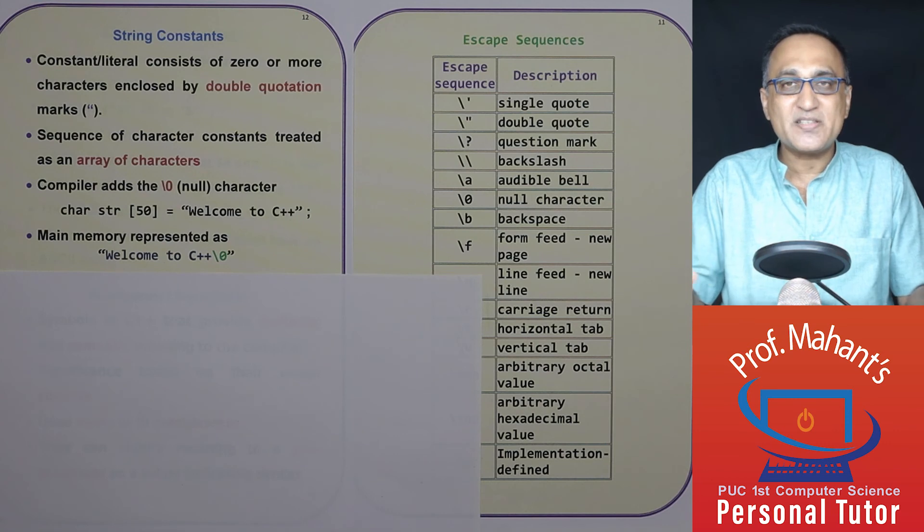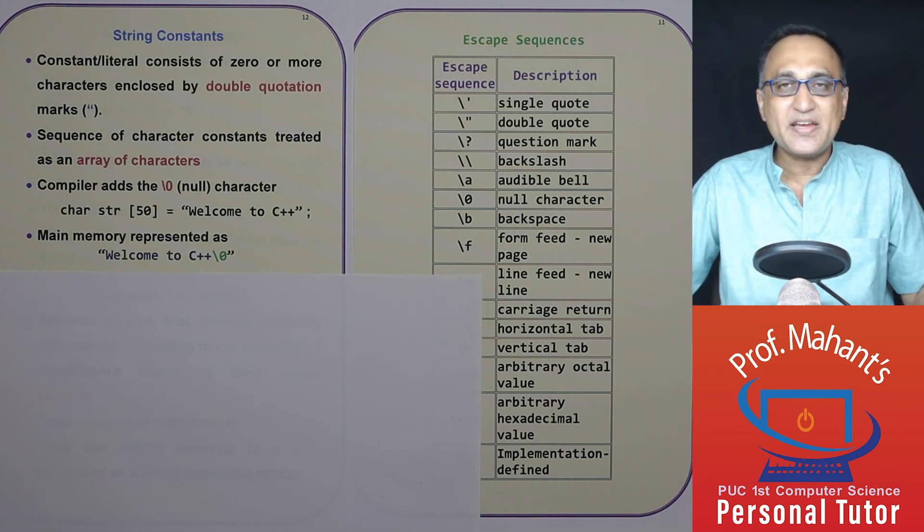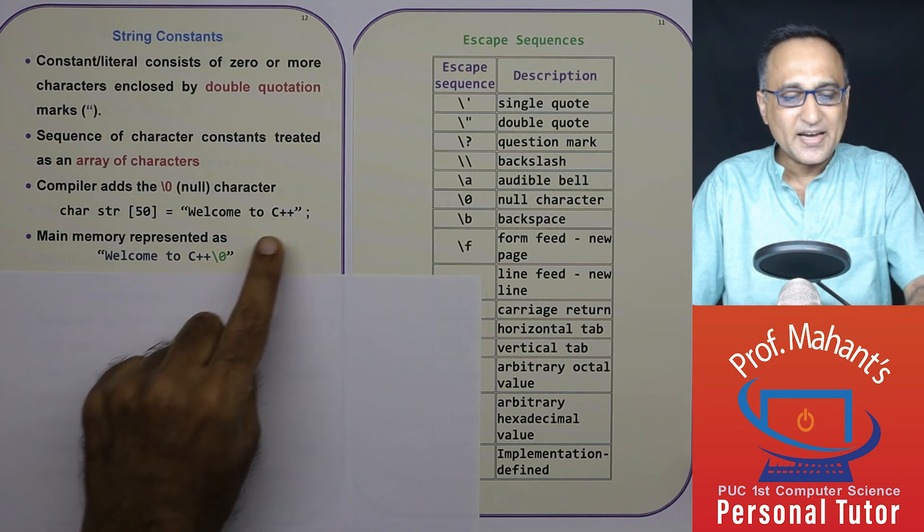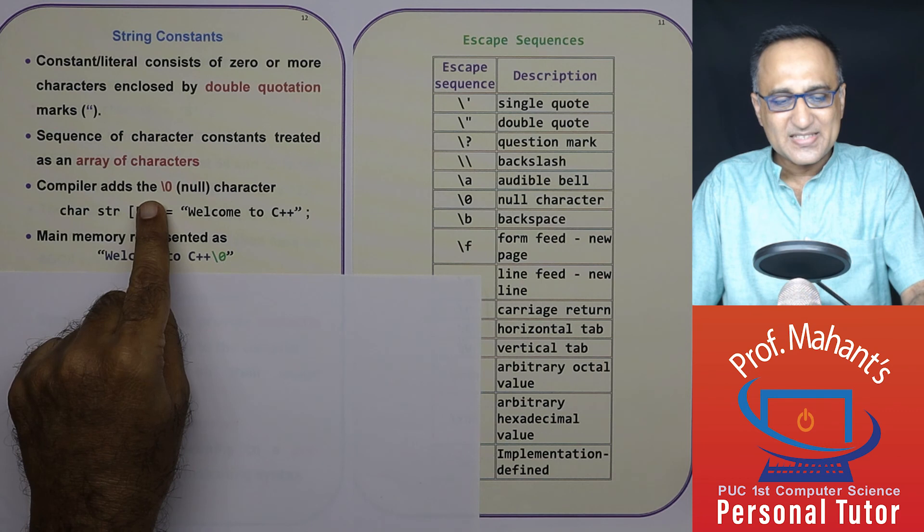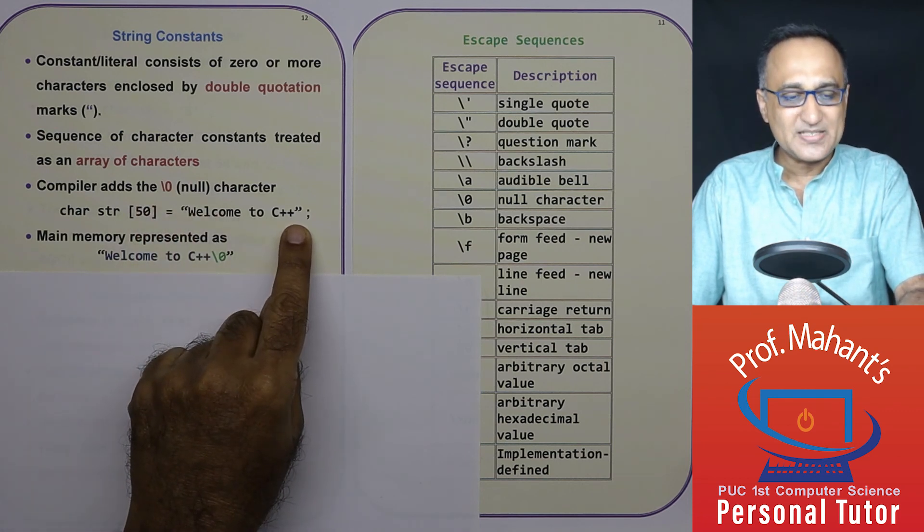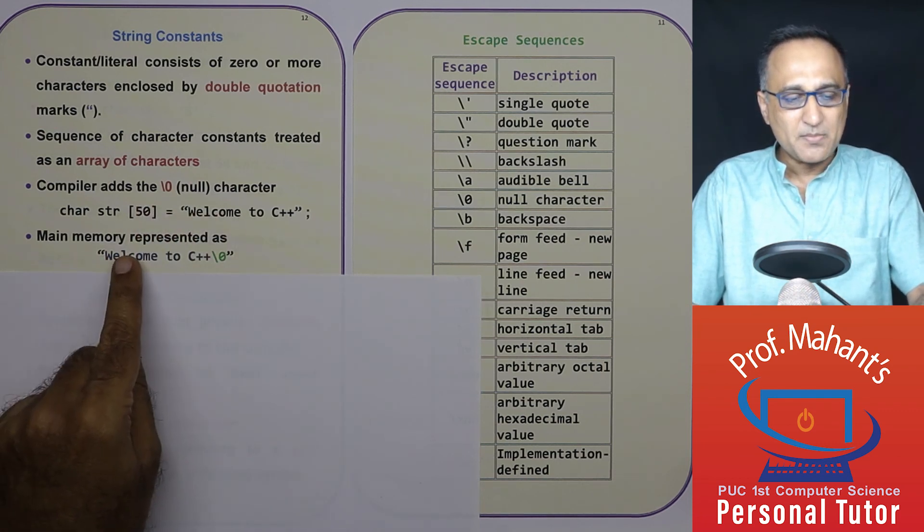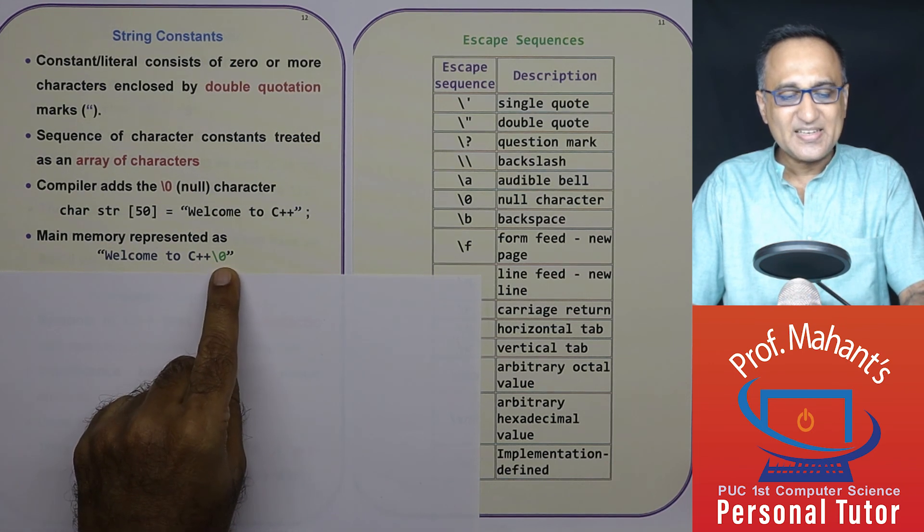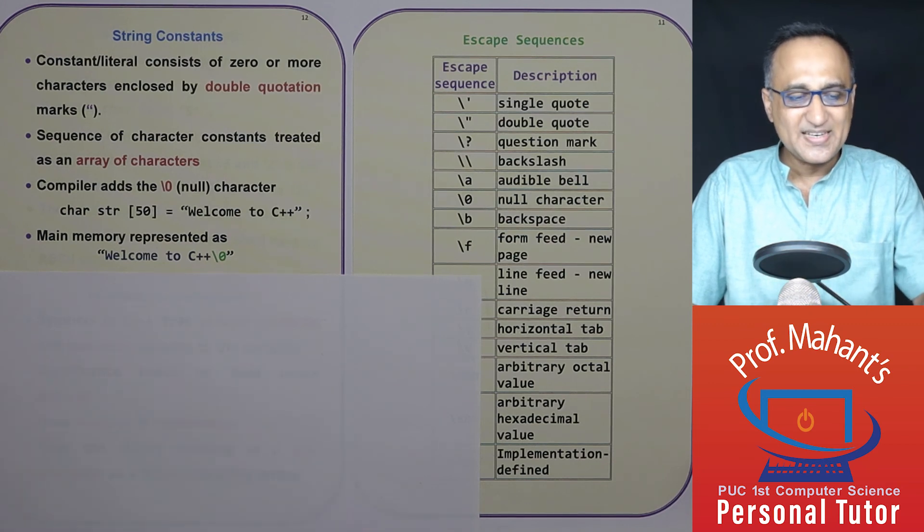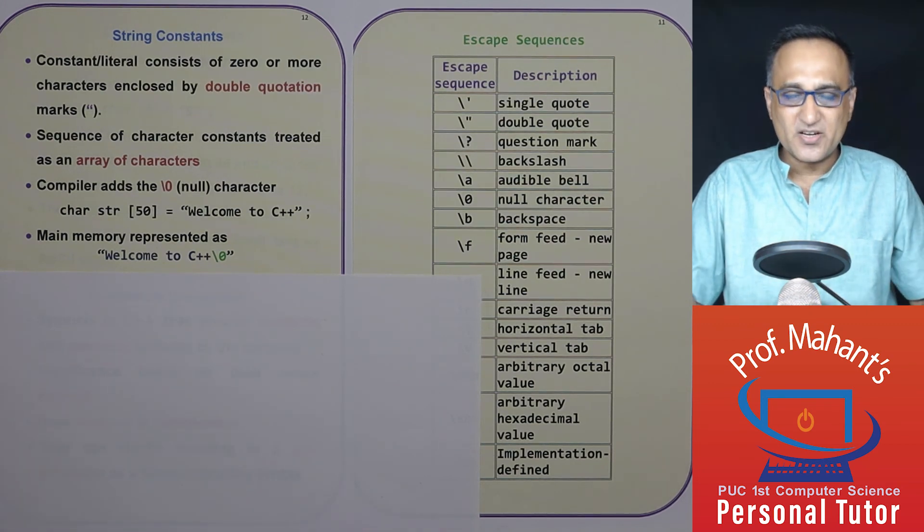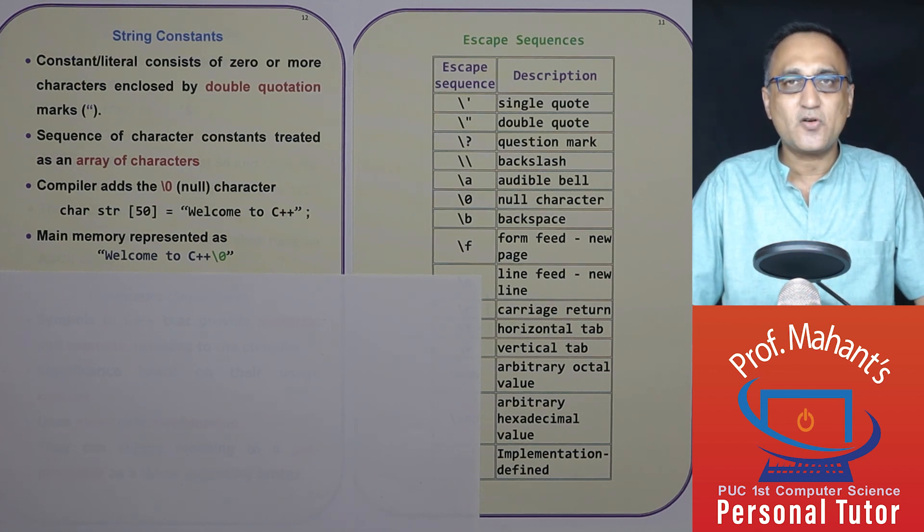If there is no null, memory is simply a sequence of ones and zeros, the string will never indicate any end. So null is used to indicate the end of a string constant. The compiler adds this null character automatically after the plus sign. So in main memory, welcome to C++ null is treated like this. So this is how you need to understand what is a string constant. A string constant or a string literal is a combination of zero or more character constants enclosed in double quotes. That is what you mean by a string constant.